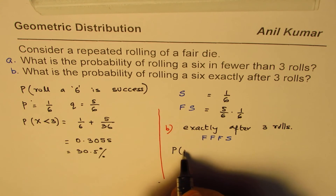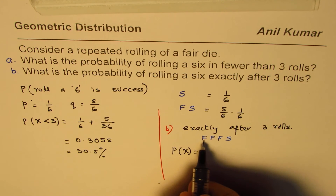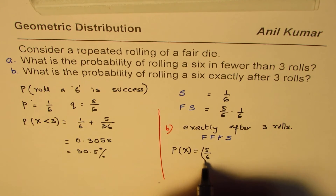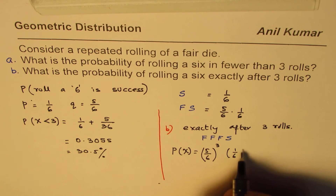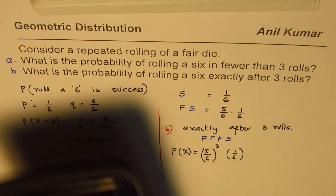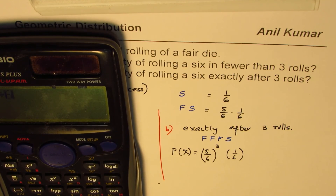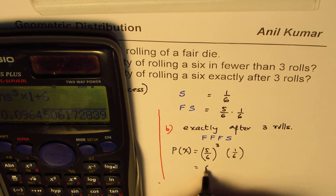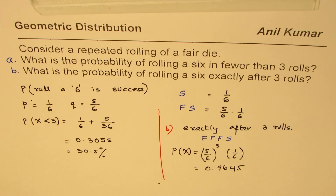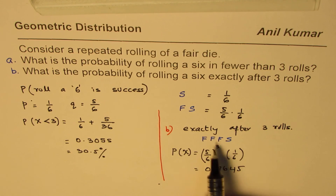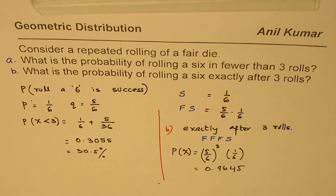The probability of our random variable will be three failures. Five over six is the probability for failure, multiplied three times, and then one success means one over six. So that becomes the solution. We have five divided by six, cubed, times one divided by six, which equals approximately 0.0965. So exactly after three rolls means the first three rolls are failures and then a success. That is how we could actually do this question.